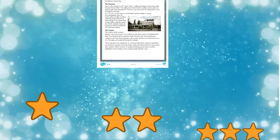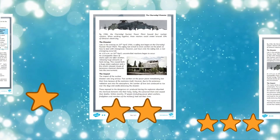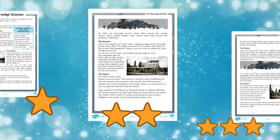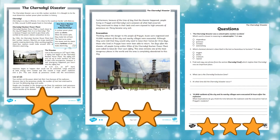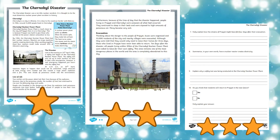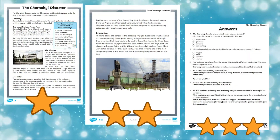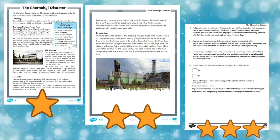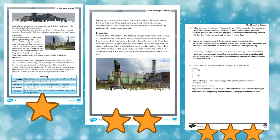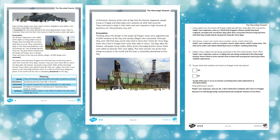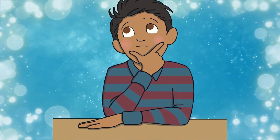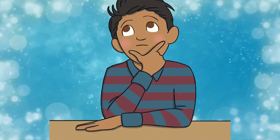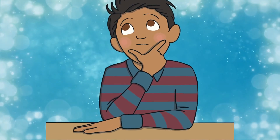Another resource is this Key Stage 2 reading and comprehension using informative differentiated sheets all about the Chernobyl disaster. Answers are included too. Please note the sensitive nature of the content and ensure that it's suitable for your educational environment before use.